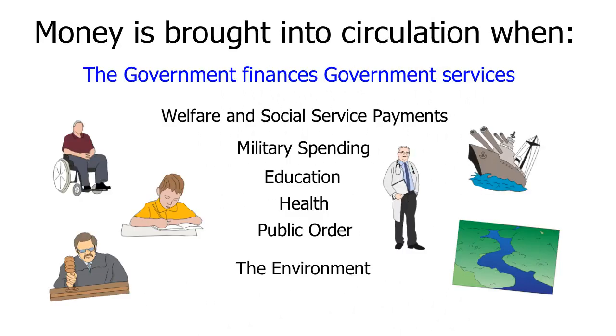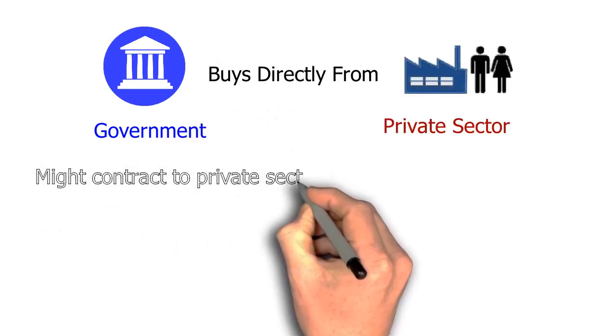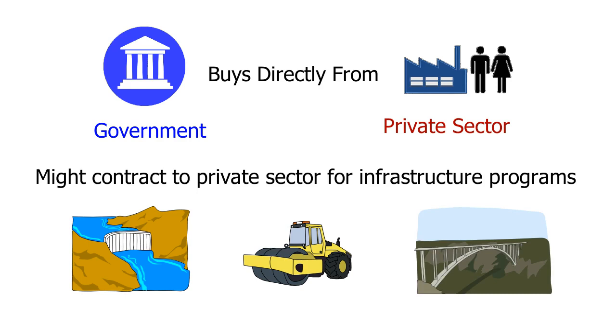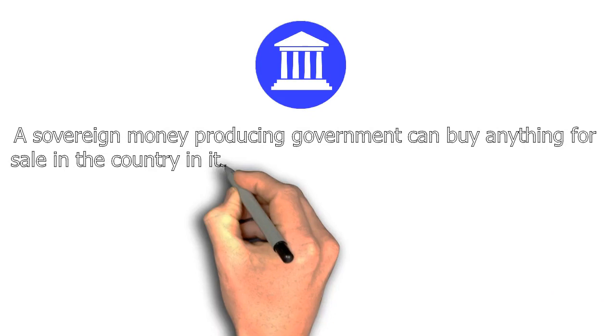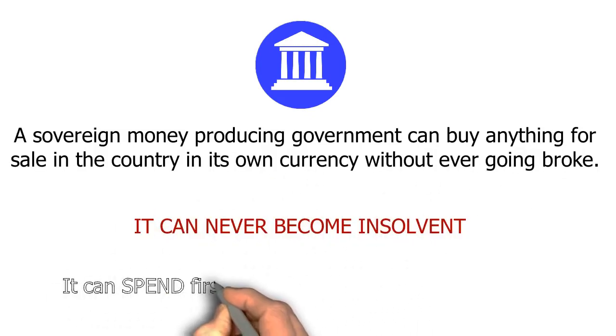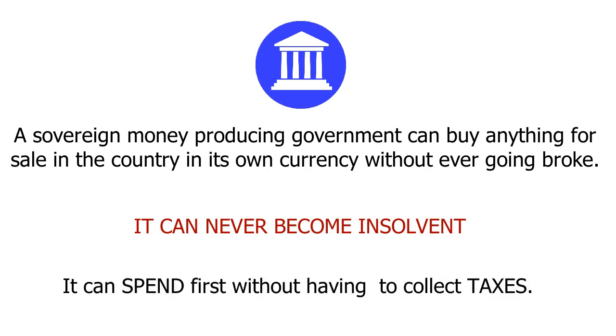Money is brought into circulation when the government finances government services such as welfare payments and social service payments, military spending, education, health, public order and the environment, and when the government buys goods and services directly from the private sector. This might include contracting out firms in the private sector to build infrastructure programs such as dams, roads and bridges. The fact that the government sector can produce its own money allows it to buy anything for sale from the private sector in its own currency without ever going broke.